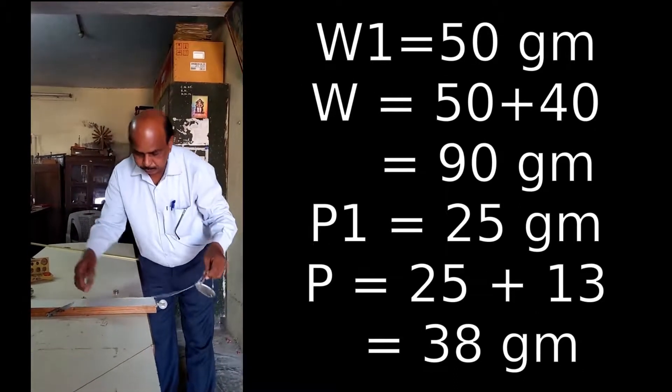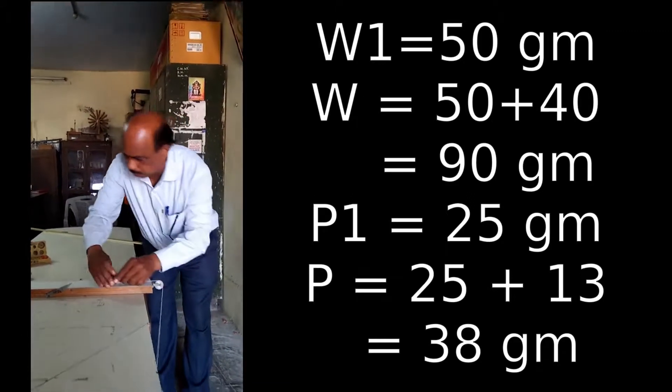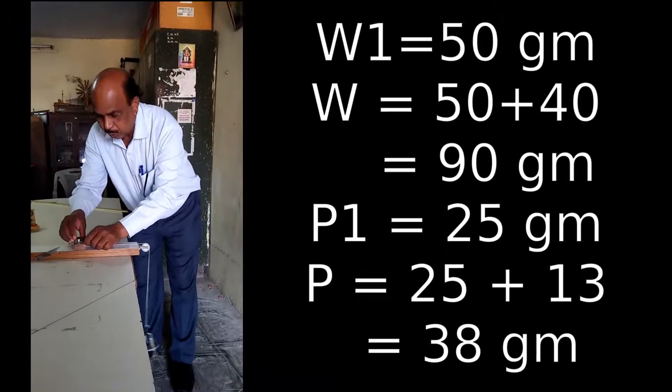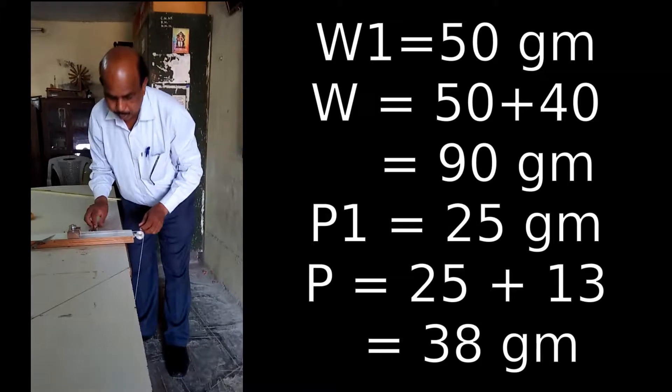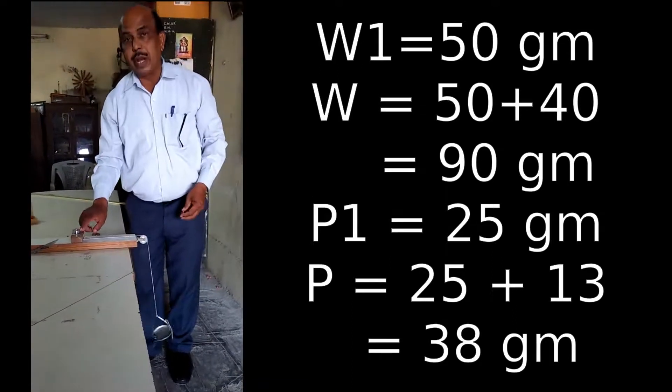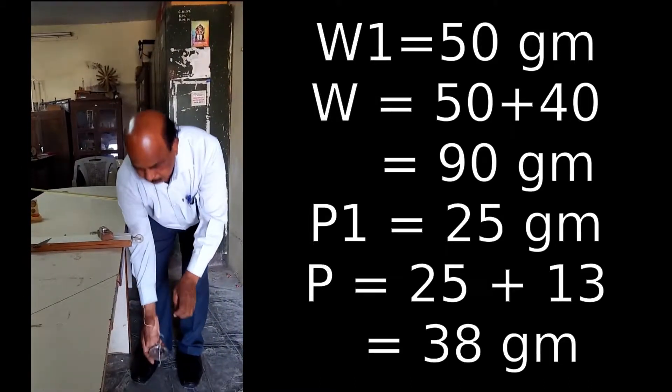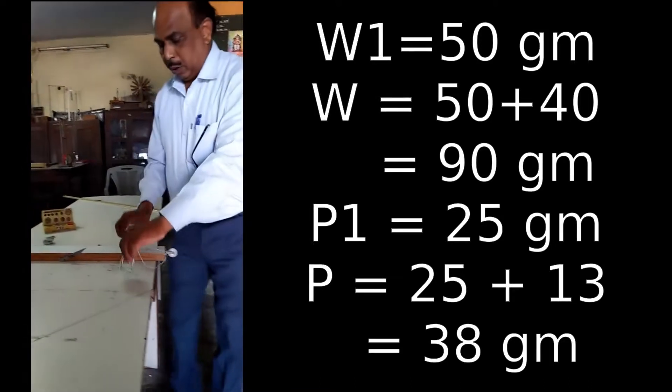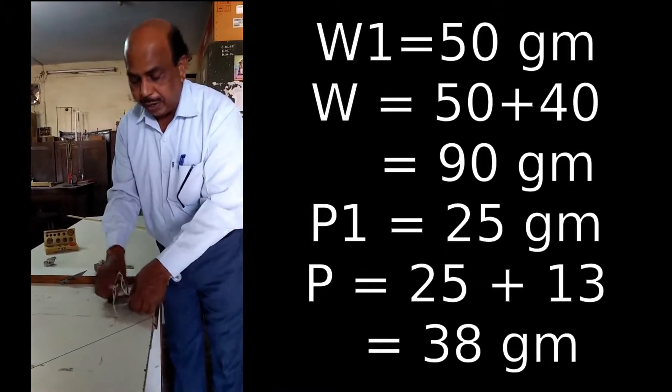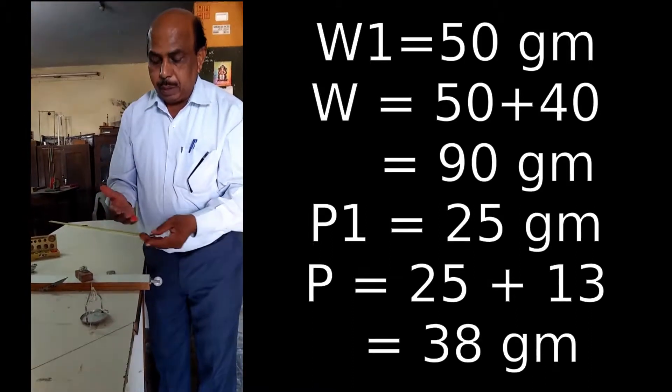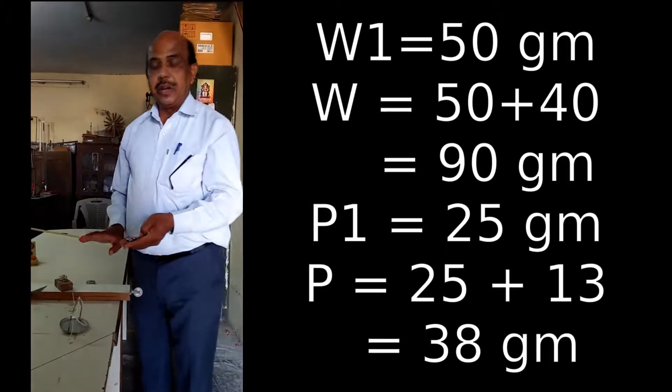We add 50 grams. Therefore, 40 plus 50 which is equal to 90. Therefore, the weight in the pan is 20 plus 5, 25 plus 13, it means 38.